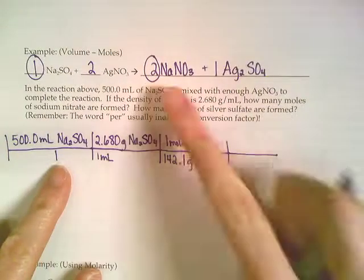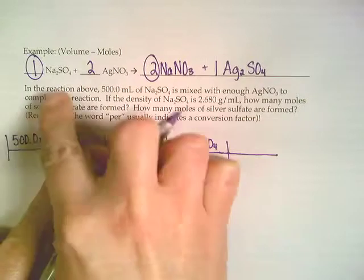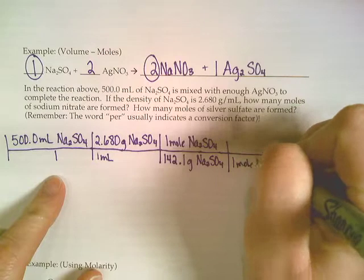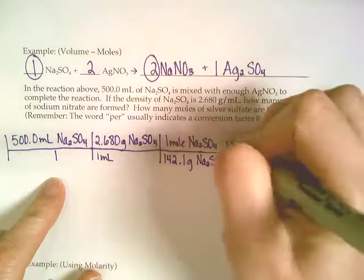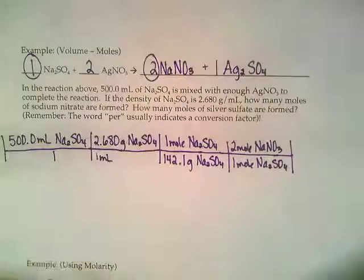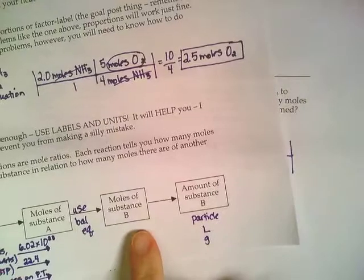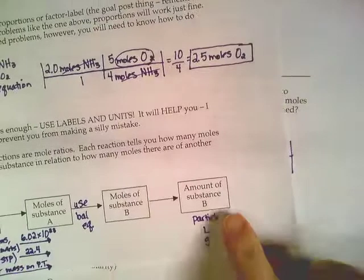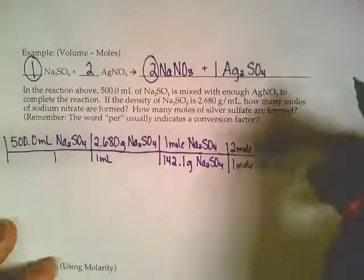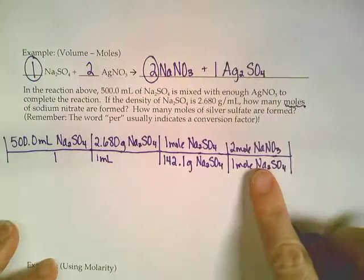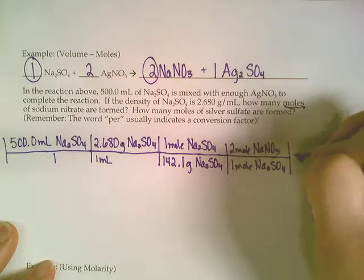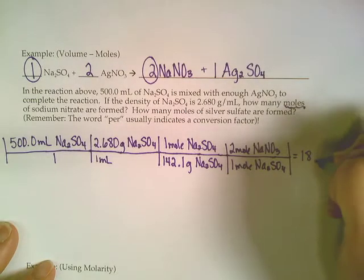Because I want my sodium sulfate to cancel out and go away, I'm going to put that one on the bottom. And the two is going to go on the top. Now usually when you're doing a stoichiometry problem, it's a four-step process, that you need to get those moles into some kind of particles, liters, or grams. But this particular problem only wanted us to go to moles. And we're there. So we can stop. Now we just multiply across and find out how many moles that would be. And you would get 18.86 moles of NaNO3.